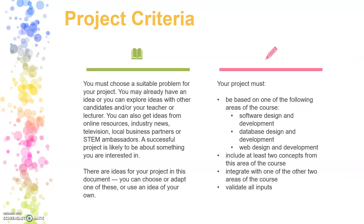The next thing you have to think about is the criteria. Basically, you can create your project on anything as long as it meets the criteria. A lot of people in the past have picked to do a game — absolutely fine — but try not to do anything too complex. It can be a software development project, a database-focused project, or a web-focused project, and it has to include two concepts from each of the areas, whichever one you pick. The new level of complexity added to the new style of Advanced Higher projects is that you need to include some kind of integration, which I'll talk through in a second.